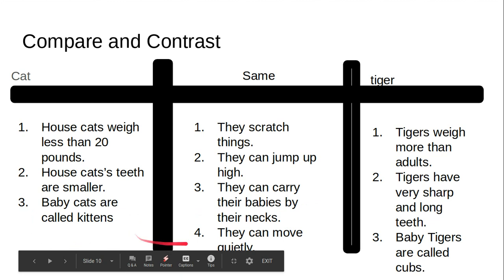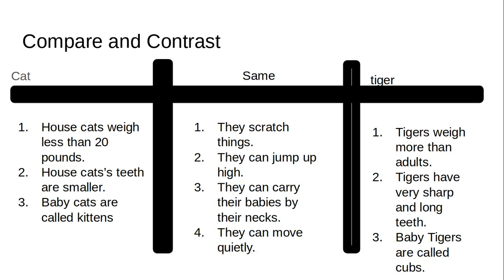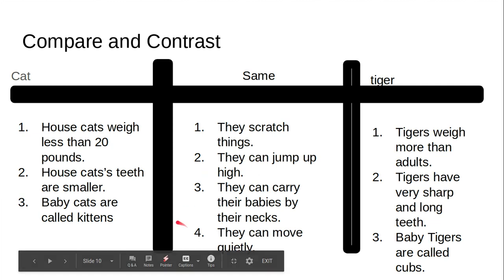Baby cats are called kittens in household cat land, and baby tigers are called cubs — so that's different. The same: they both scratch. My cats have little scratching posts so that they scratch that and not my furniture, and tigers scratch trees. They can jump really high — my cats have no problem jumping up to things. They carry their babies by their necks — it's called a scruff. Cats have this little bit of extra skin near their neck where their mom can grab them and it doesn't hurt them. They're just being held that way. And they can move very quietly.